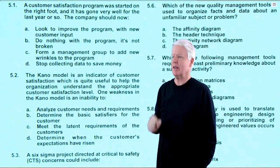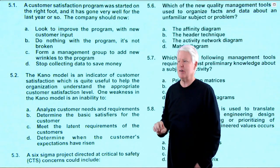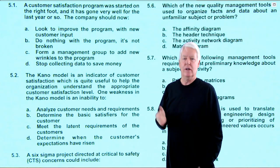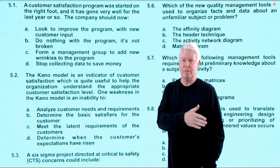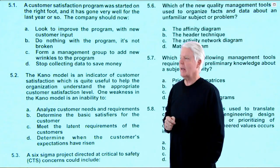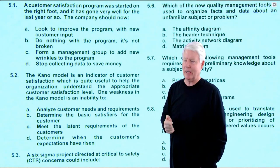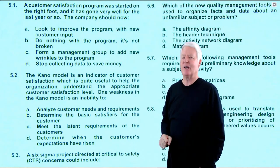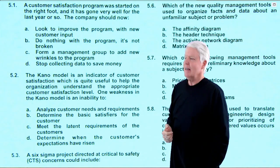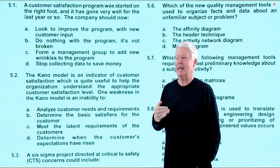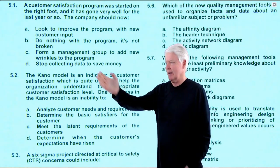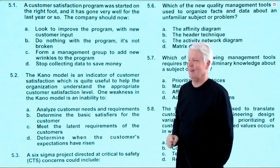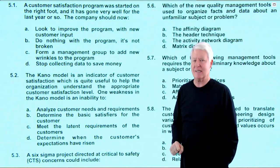Question 1: A customer satisfaction program was started well and has gone very well for the last year. The company should now do what? This is a typical ASQ value system question — ASQ wants you to continue to improve. Option A — look to improve the program with new customer input — hits both 'improve' and 'customer input,' two powerful value-system qualifiers. I'm picking A without reading the rest. Options B through D — do nothing, form a management group, or stop collecting data — are all contrary to ASQ philosophy. Answer is A, no doubt.